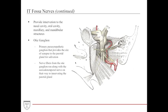The otic ganglion is a primary parasympathetic ganglion that provides a site of synapses for parotid innervation for salivation. The nerve fibers from the otic ganglion run along with the auriculotemporal nerve on their way to innervating the parotid gland — essentially hijacking along the auriculotemporal nerve.